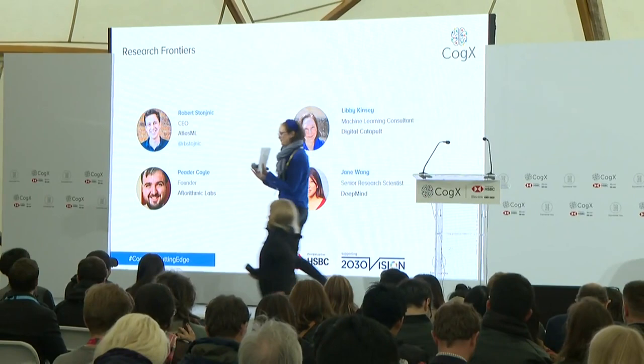Our first speaker is Robert Stoinich. He's from Atlas ML, and Atlas ML is all about democratizing machine learning in the open source community. He also runs something called Papers with Code, which is taking a data-driven approach to seeing what is hot at the moment in machine learning. So this will be a really good opening presentation. Welcome, Robert.